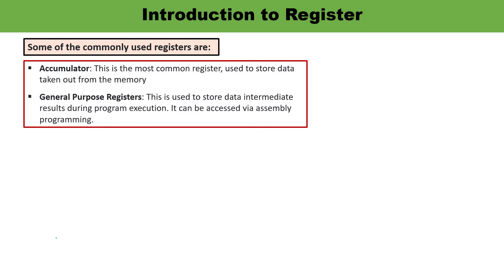Now let's talk about some commonly used registers. One is the accumulator, which is the most common register. It is used to store data taken from memory, and all required operations are performed here — even the results are stored here. General purpose registers are used to store data at intermediate stages during program execution and can be accessed via assembly programming. For example, when adding or multiplying two numbers bit by bit, those intermediate results can be stored in general purpose registers.